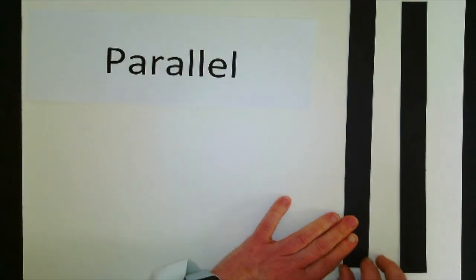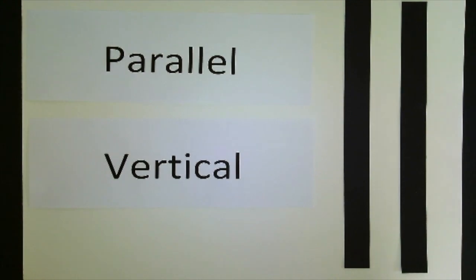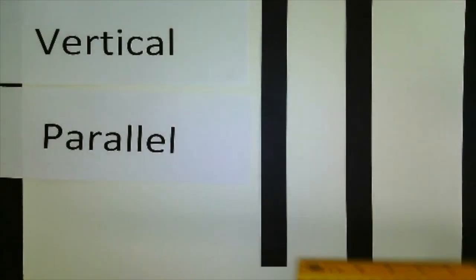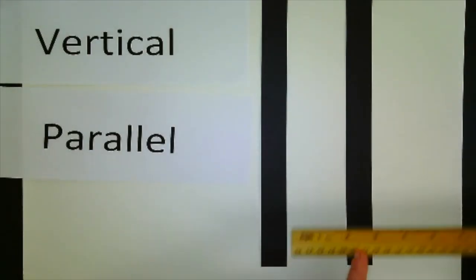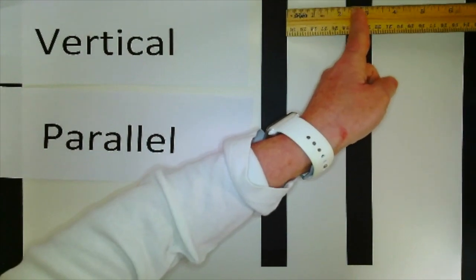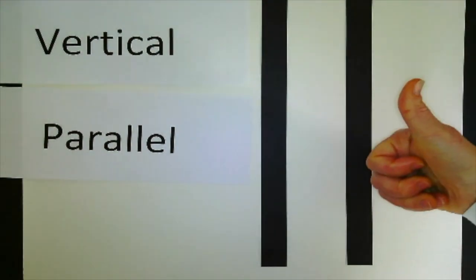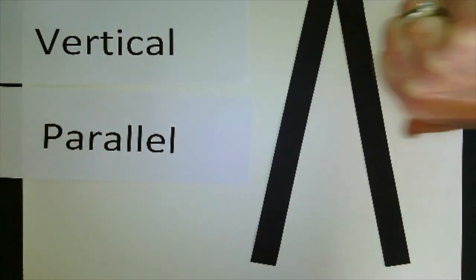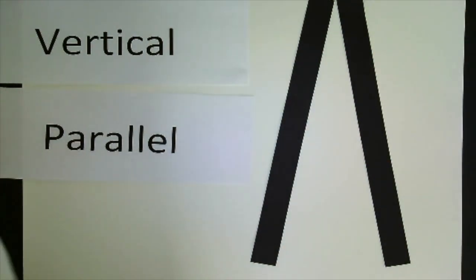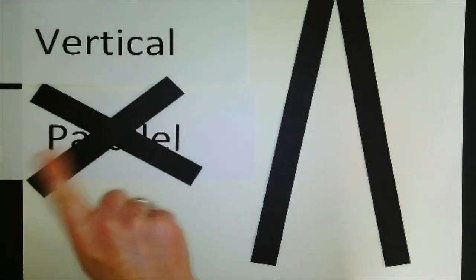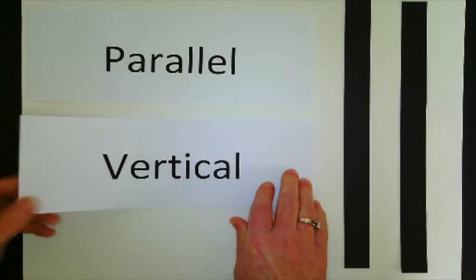Wait a minute. What if I did two standing up lines, two vertical lines? Yes, those are parallel. They are equal distance from one side to the other. But if they aren't equal distance, no, they are not parallel. Parallel.